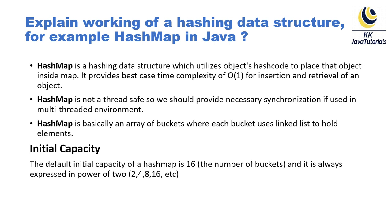HashMap is basically an array of buckets where each bucket uses a linked list to hold elements. The initial size of HashMap is 16, so there are 16 buckets. Every bucket holds a linked list, and when we add any key-value pairs, that key-value pair is added into a bucket. Inside the bucket, the entry object — that is, the key-value pair — gets added into the linked list.